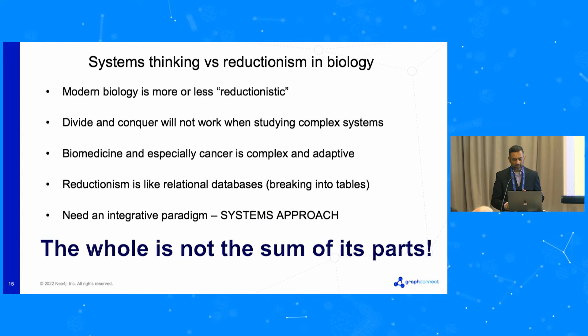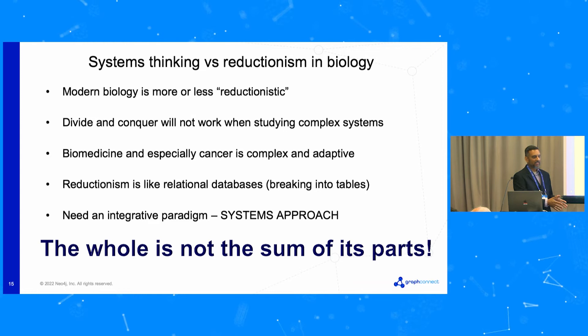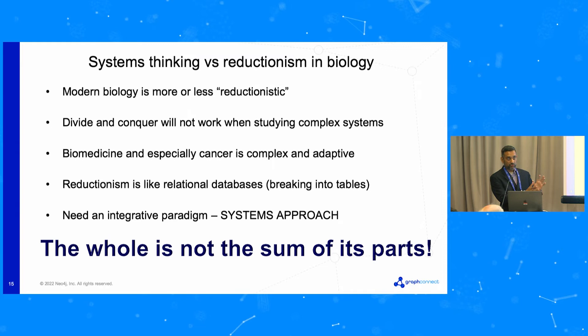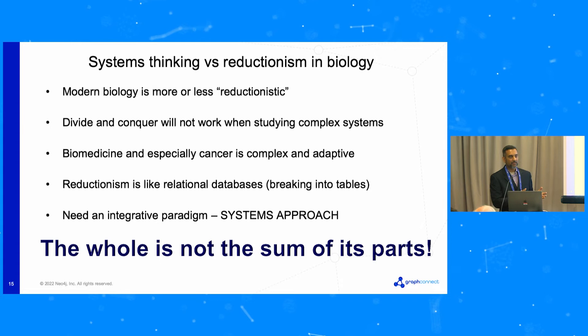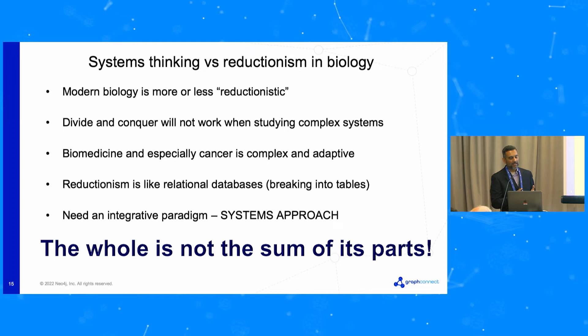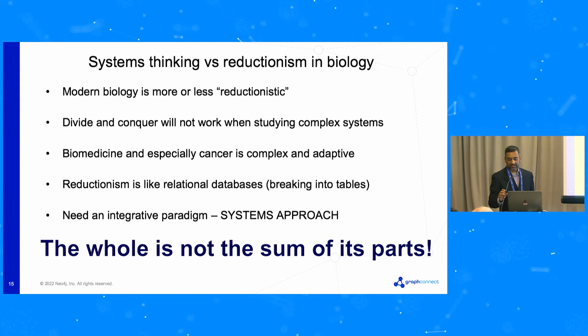That's the problem with current biology. Modern biology is more or less reductionistic — trying to understand a gene or a group of genes individually, then trying to put them together, and that's not going to work. Once you break the system, having a holistic understanding is almost impossible. It's like in quantum mechanics you have the Heisenberg uncertainty principle — you can't determine conjugated variables simultaneously. Once you try to understand something by dividing it, putting it together and studying doesn't work. This is because biomedicine, especially cancer, is very complex and adaptive. These are emergent phenomena.